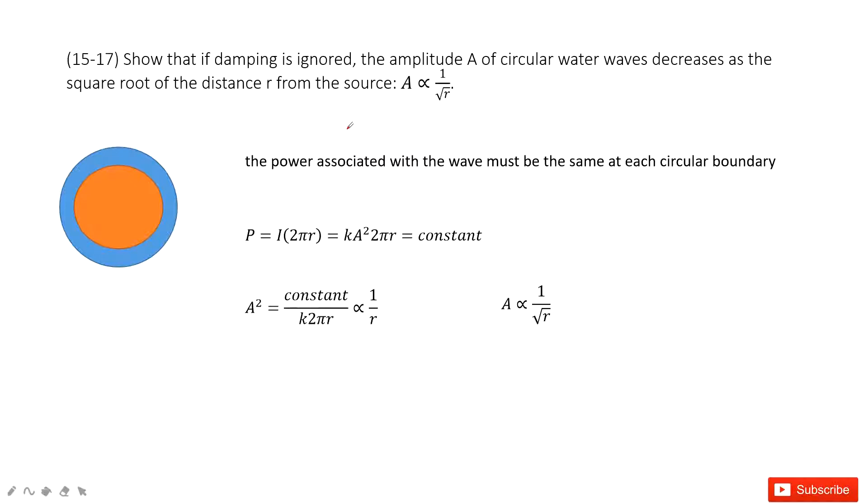Let's look at problem 17 in chapter 15. Chapter 15 is about waves. In this one, we need to prove its equation. The amplitude A of circular water waves decreases as the square root of the distance r from the source.